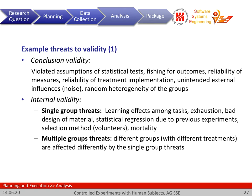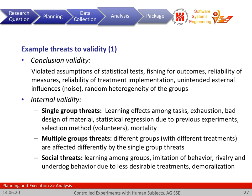Finally, there are social threats. For example, learning among groups may obscure any differences. Imitation of behavior, underdog behavior, and demoralization may all strongly impact how people behave, how they execute the experiment, and therefore what results we get — adding factors beyond the treatment itself.